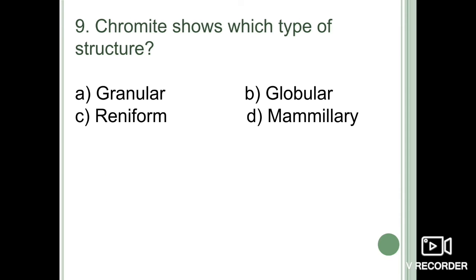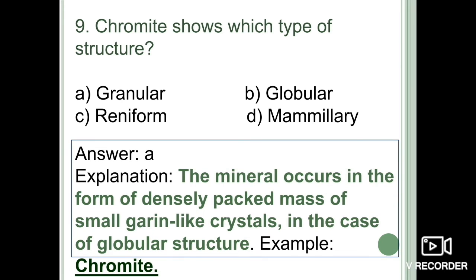Next question: chromite shows which type of structure — granular, globular, reniform, or mammillary? Minerals that occur as aggregates of equidimensional grains — grains equal in dimension — are granular in form. Chromite occurs in the form of a densely packed mass of small grain-like crystals. The correct option is option A: granular form.